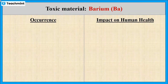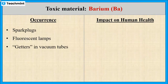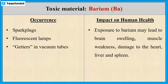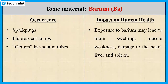Barium is a metallic element that is used in spark plugs, fluorescent lamps and vacuum tube getters. Due to its low stability, it forms poisonous oxides when it contacts with air. Exposure to barium may lead to brain swelling, muscle weakness, and damage to the heart or liver.